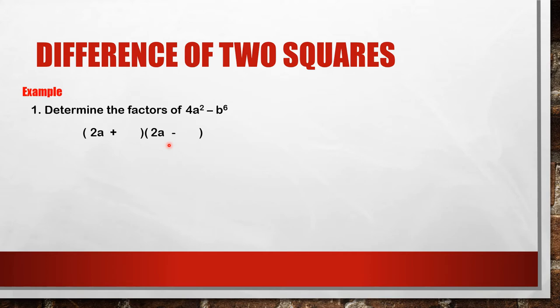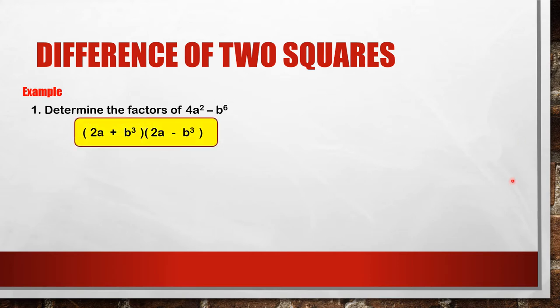The square root of b to the power of 6 is b cubed. Therefore, the factors of 4a squared minus b to the power of 6 are the product of (2a plus b cubed) times (2a minus b cubed), and this is our answer.